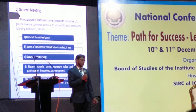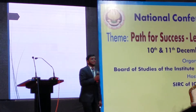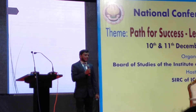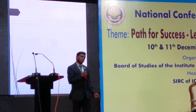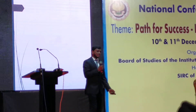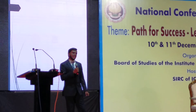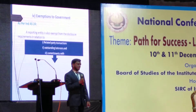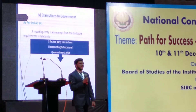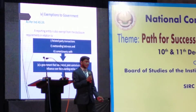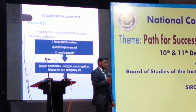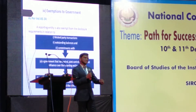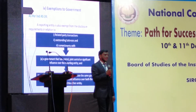Now let us examine the list of exemptions available. The term 'government' is clearly defined in Ind AS 24. As per Ind AS 24, government includes government agencies, local bodies, and other similar bodies maintained by local, national, or international authorities. A reporting entity is exempt from the disclosure requirements relating to related party transactions, outstanding balances, and commitments with a government that has control, joint control, or significant influence over the reporting entity, and with another entity that is related because the same government has control, joint control, or significant influence over that other entity.